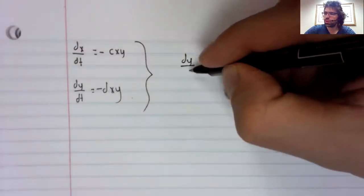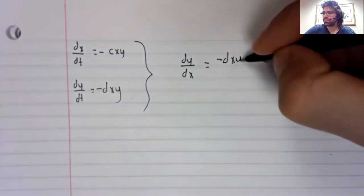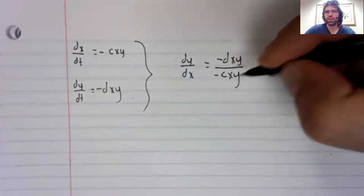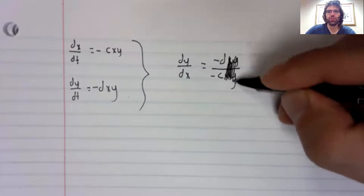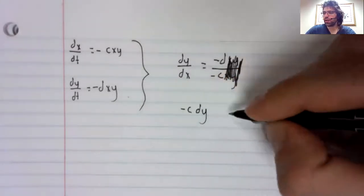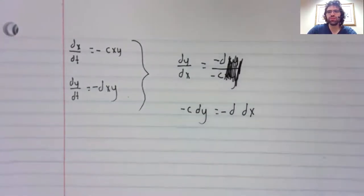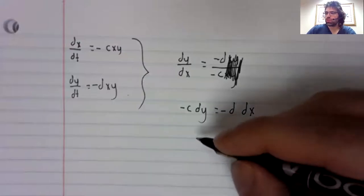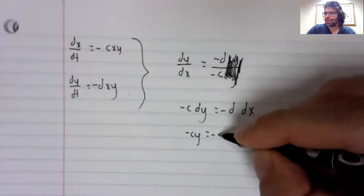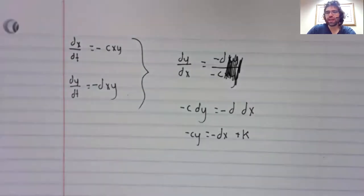Therefore dy dx, you see the x's and the y's both cancel. You get negative c dy equals negative d dx. Integrating both sides, negative c y equals negative dx plus k.